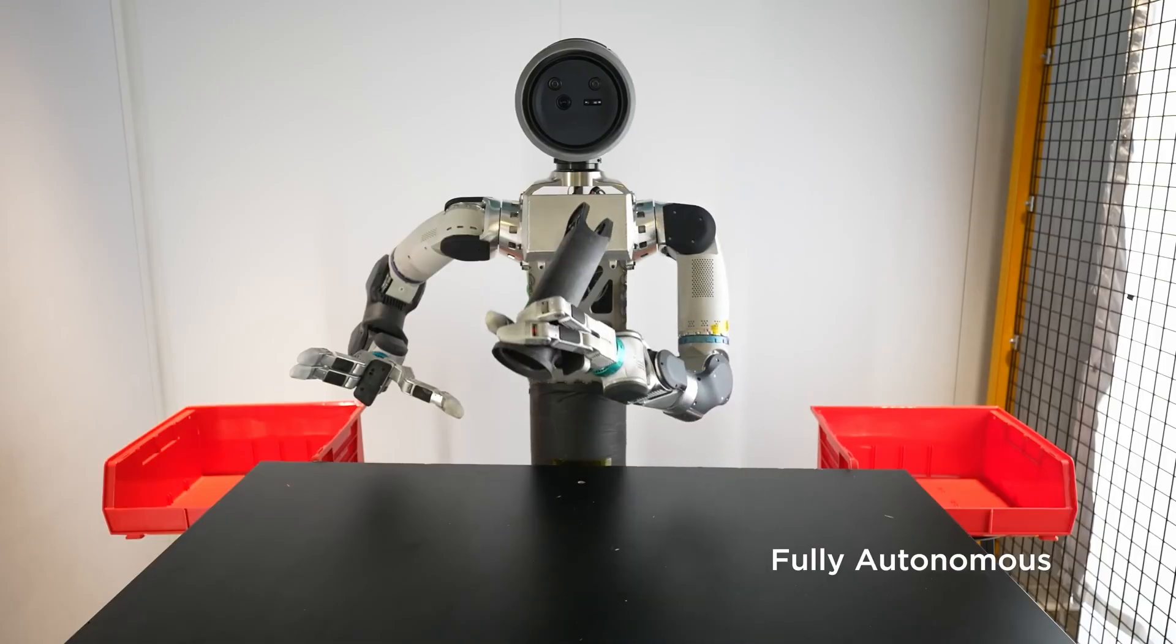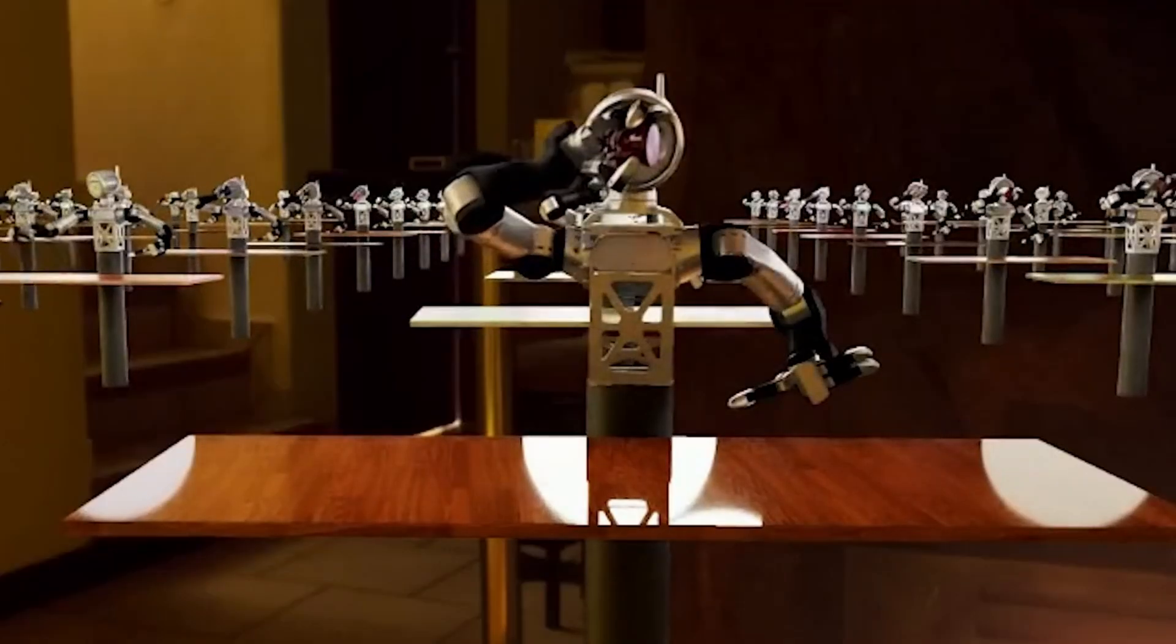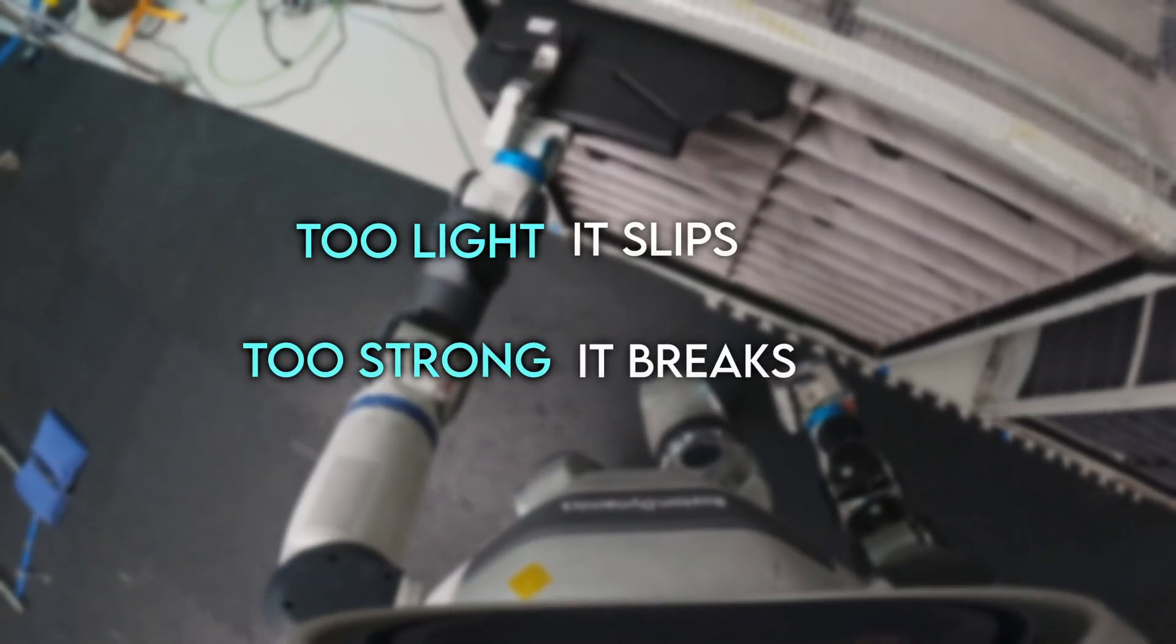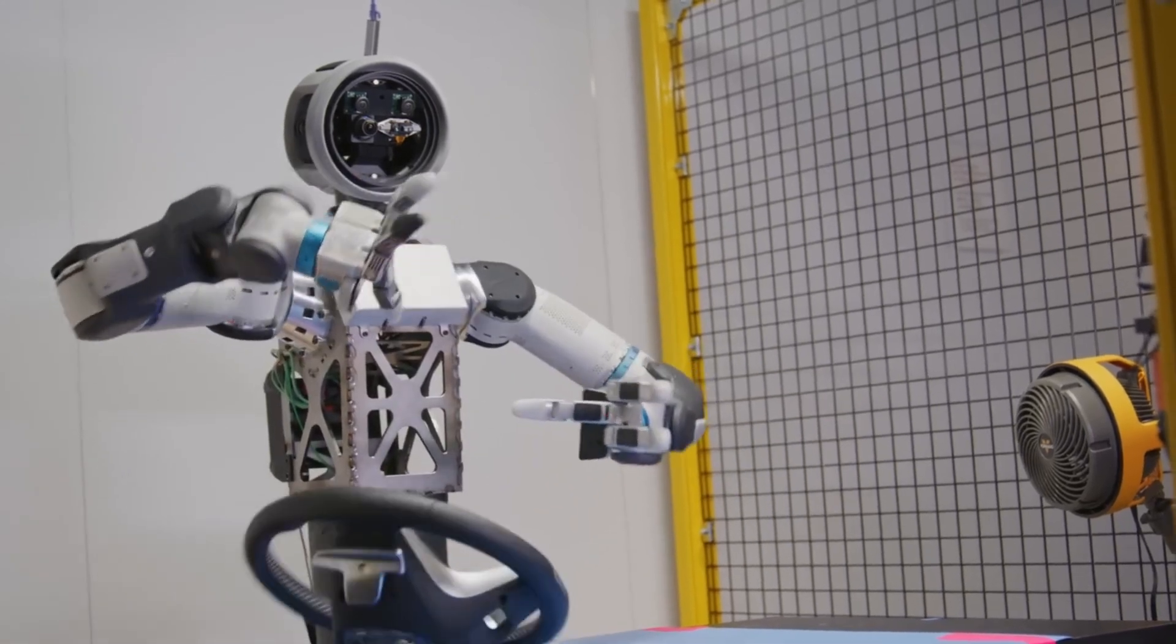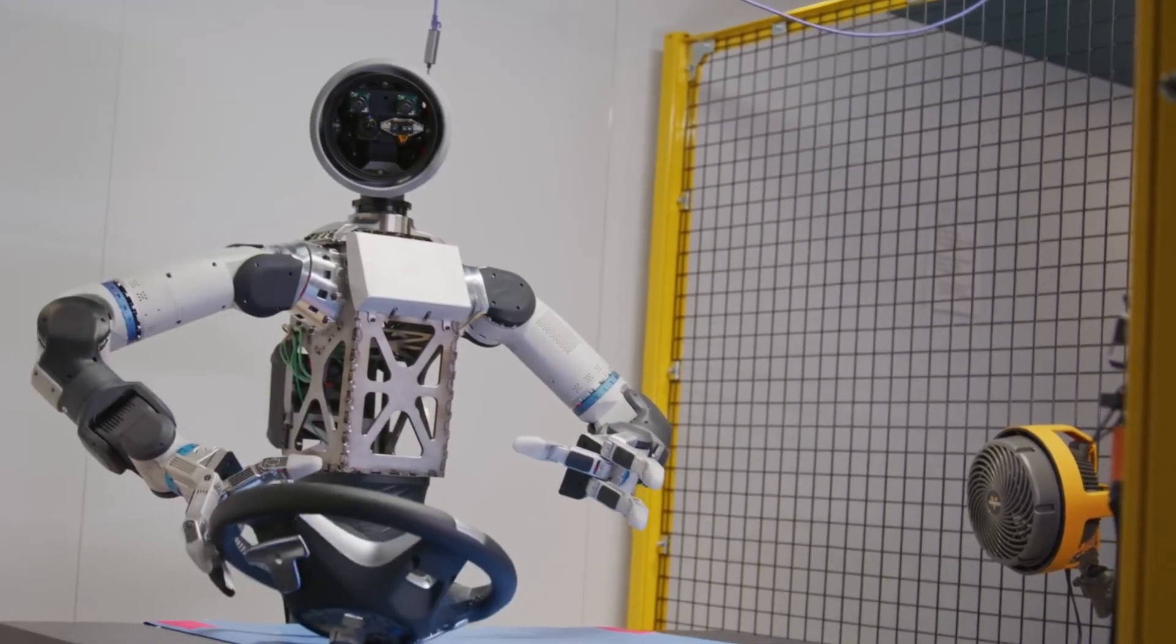The goal is simple: apply the smallest possible force that still keeps the object stable. Too light, it slips. Too strong, it breaks. And the robot constantly adjusts that balance, just like we do, unconsciously.